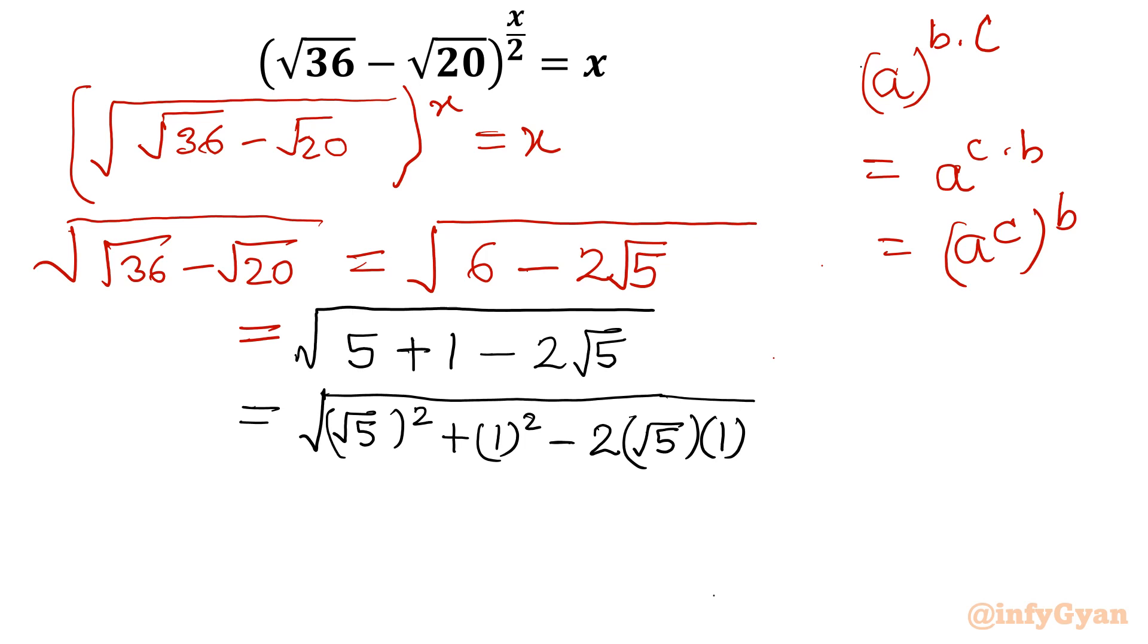What I am trying to do here actually is forming a square plus b square minus 2ab, and then I will write a minus b whole square. This is root 5 minus 1 whole square. So square root and square will get cancelled. We will have root 5 minus 1.